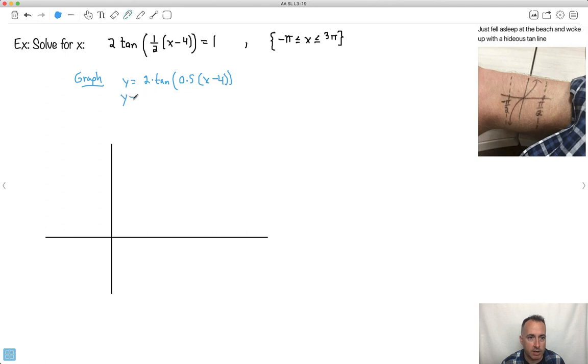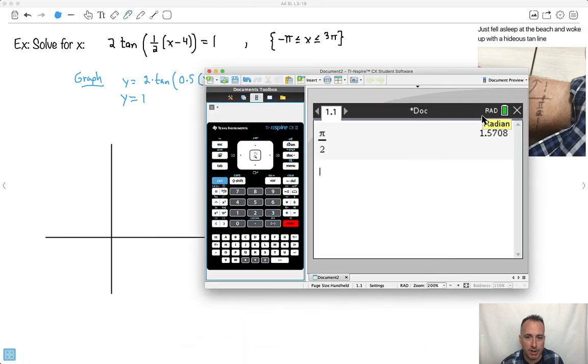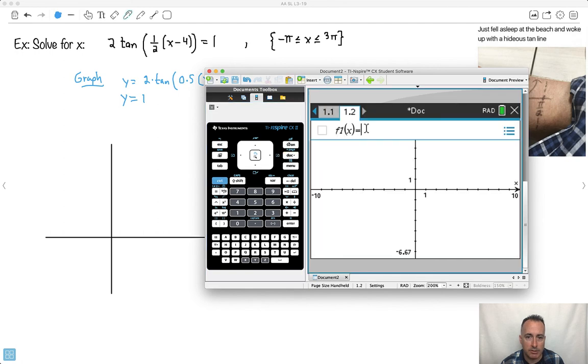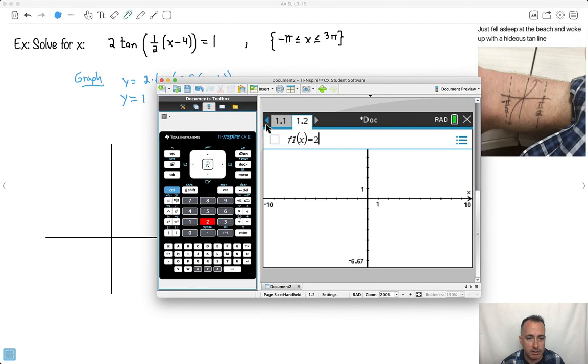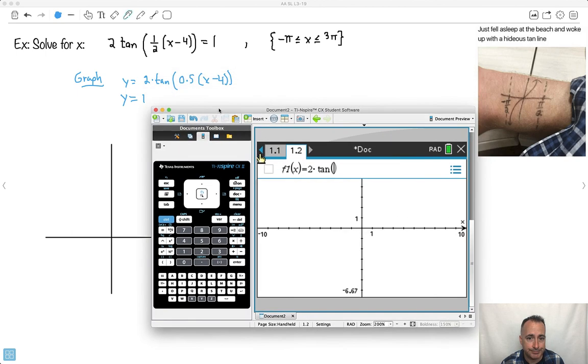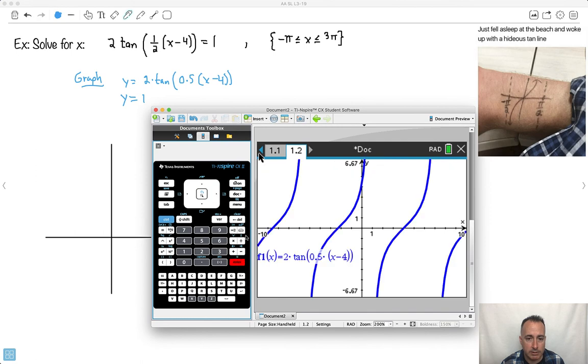Make sure I'm in radian mode because I've got some pi's going on. So I'm still in radian mode, that's good. I'll go to add page, new graph. And let's just do exactly what I said I would do here. 2 times tangent of, here I put in 0.5, times open bracket, and I say x minus 4. Now I've got close brackets. That's good. So boom, I've got that big mess. Maybe I should graph my other one as well. So y equals 1. Boom.